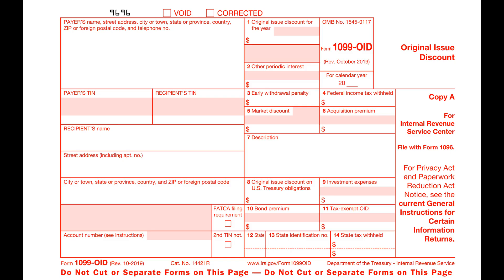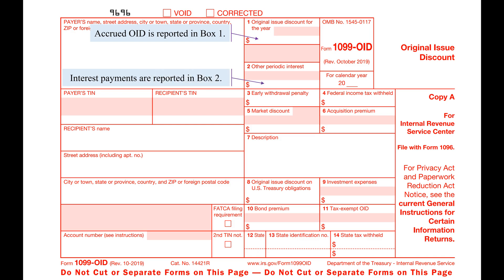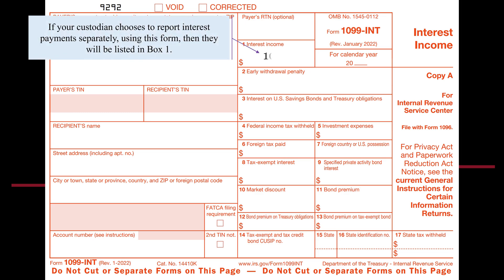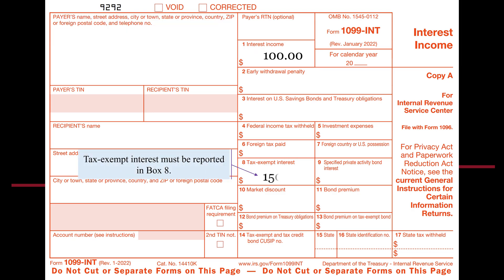OID is reported on Form 1099-OID from your custodian, showing accrued OID in Box 1, interest payments in Box 2, market discounts in Box 5, and acquisition premium in Box 6. Although it is not necessary, some custodians may choose to report the annual payment of interest separately. If interest is not reported on Form 1099-OID, then the interest income is reported on Form 1099-INT in Box 1. Even though tax-exempt interest is not taxable, it still must be reported.